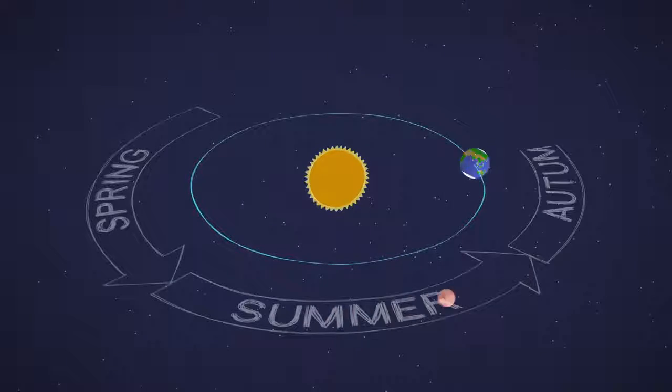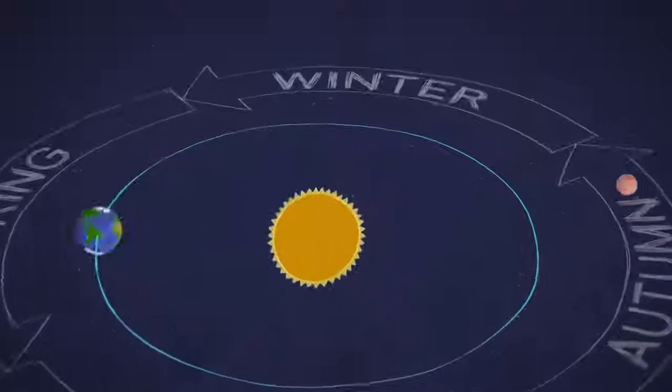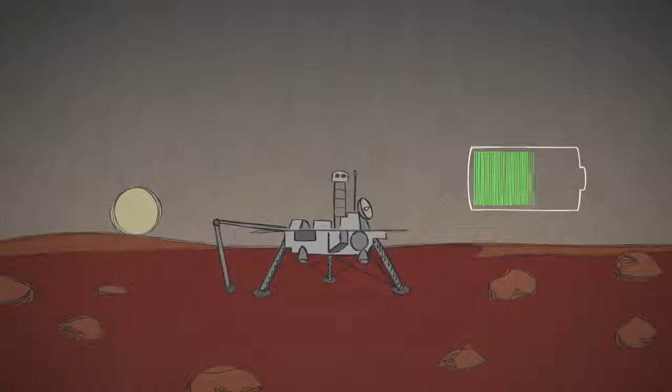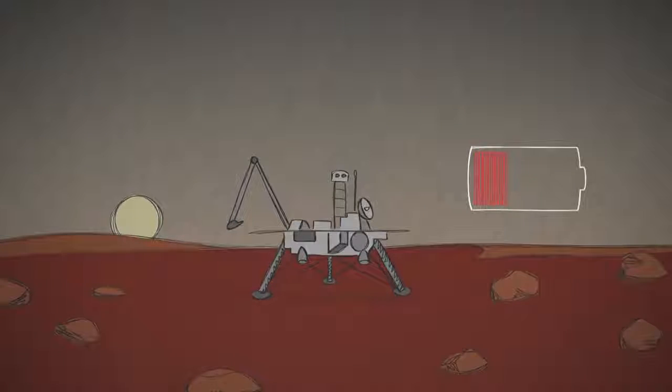That longer year means longer seasons too. Over extended Martian winters, the shorter days and reduced sunlight mean that solar-powered spacecraft sometimes have to carefully conserve their energy.